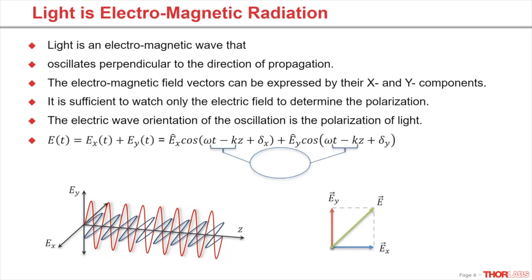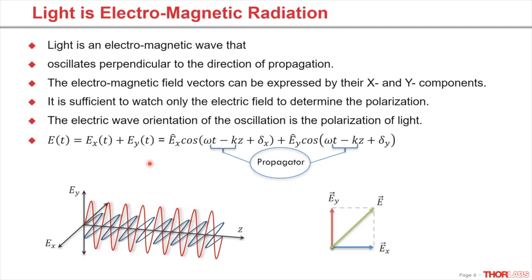When you look at the formula that describes the velocity of the electric field vector, we can detect the dependency of the angular frequency omega and the wave number magnitude k. The difference of both — the so-called propagator — describes the temporal beam propagation in space. The time-space propagator is the same for the X and Y components of the electric field and can therefore be excluded from the calculation of the field vector.